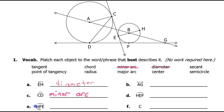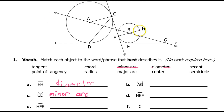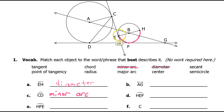Arc HFE — the three letters tell us which way we have to go. Arc HFE is a semicircle. See how it begins and ends on the diameter? That makes this half of a circle a semicircle.